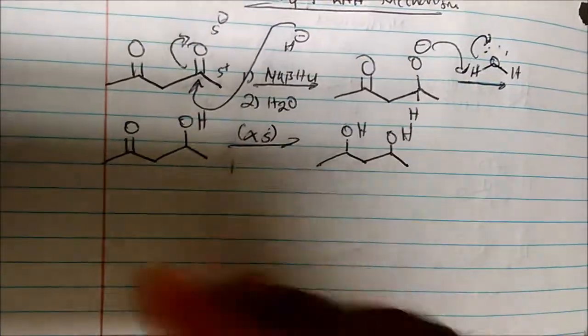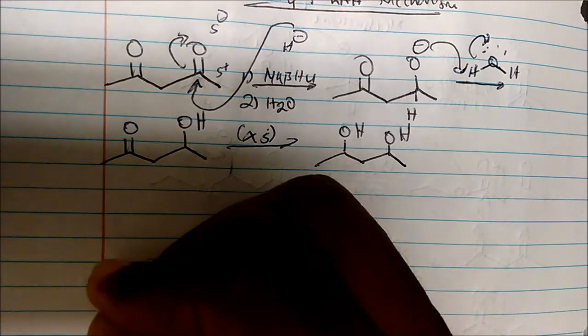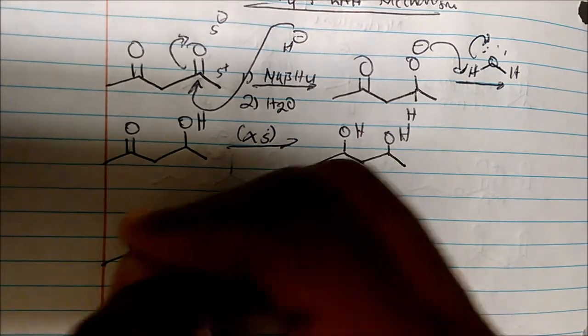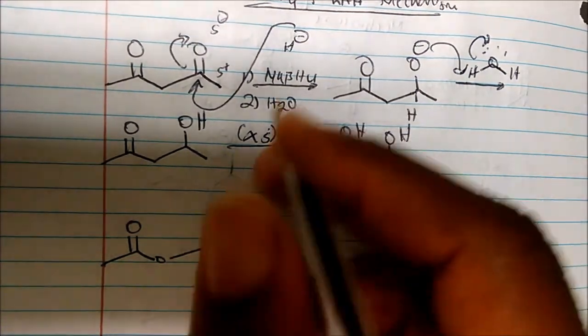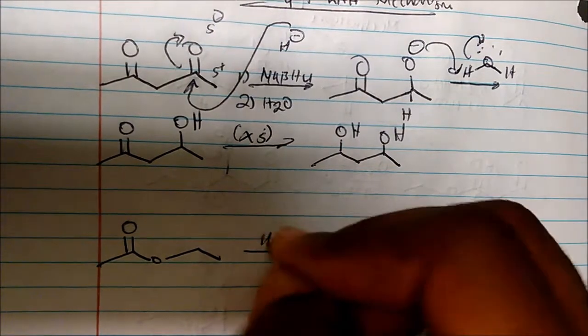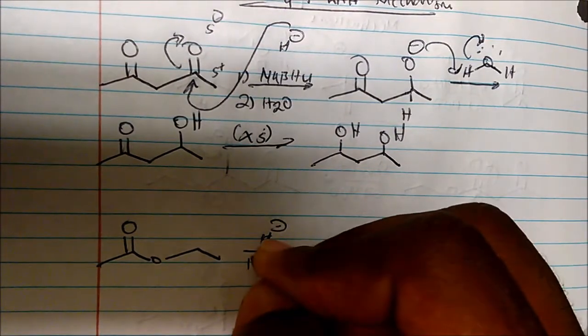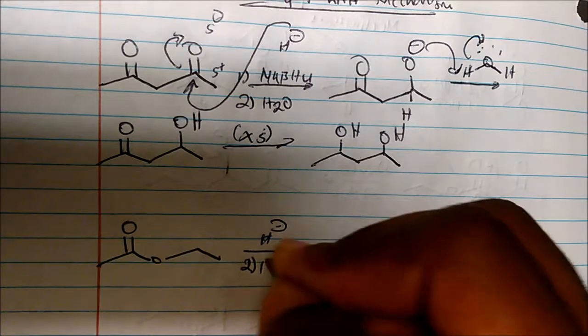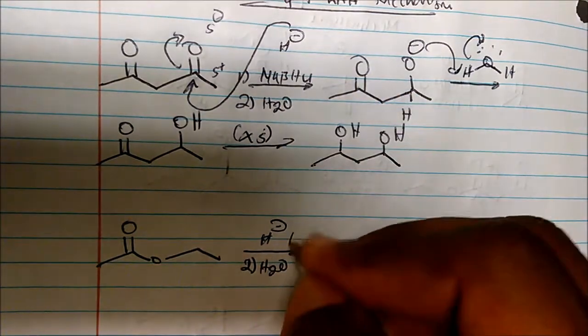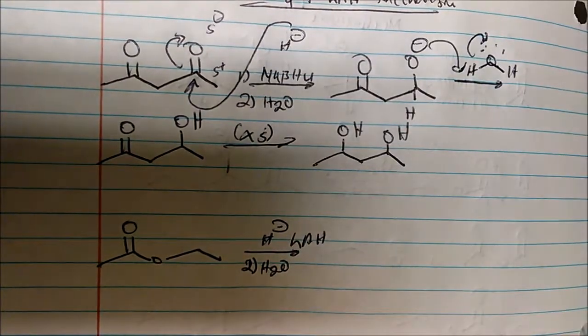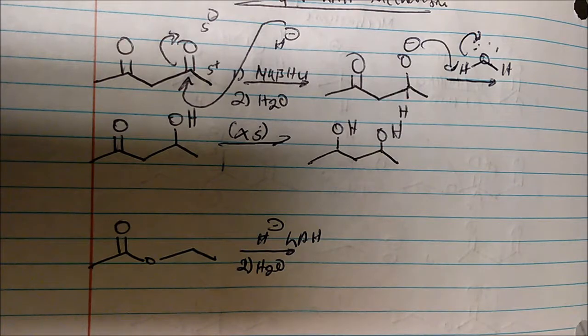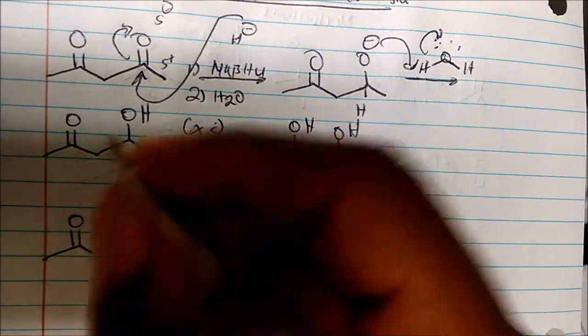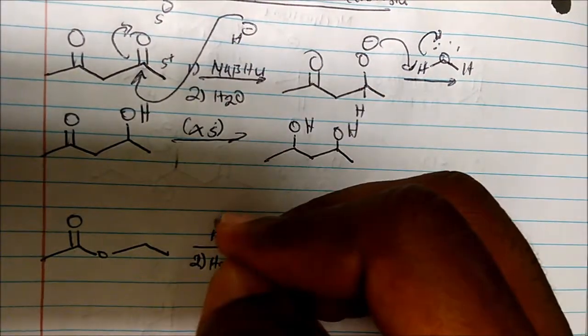For lithium aluminum hydride: if we're given this molecule with an ester, we add some sort of H minus in the first step and water in the second step. Remember lithium aluminum hydride reduces ketones, esters, carboxylic acids - all of them. In the first step of the mechanism, this carbon is slightly electrophilic.